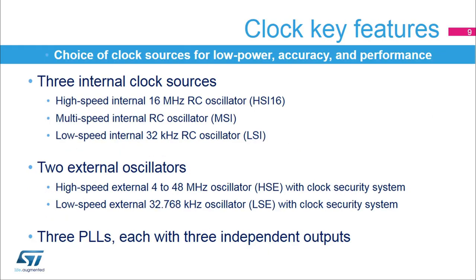The RCC offers a large choice of clock sources, which can be selected depending on low power, accuracy, and performance requirements. STM32L4 devices embed three internal clock sources: a high-speed internal 16 MHz RC oscillator or HSI16, a multi-speed internal RC oscillator or MSI, and a low-speed internal 32 kHz RC oscillator or LSI.